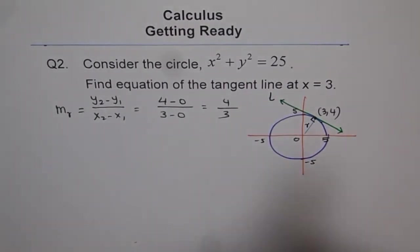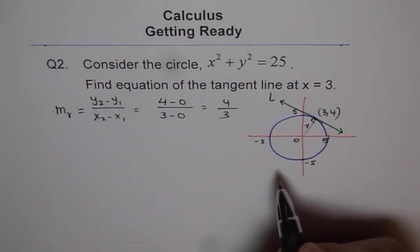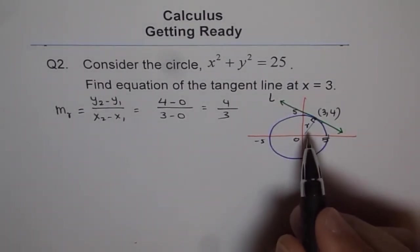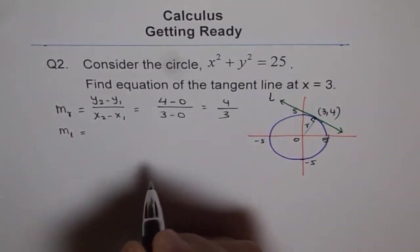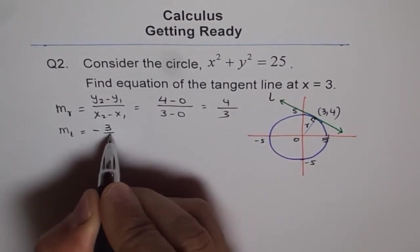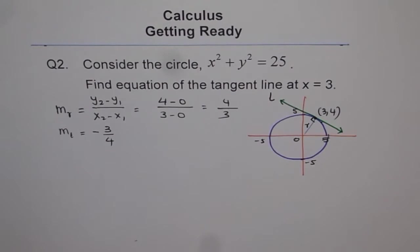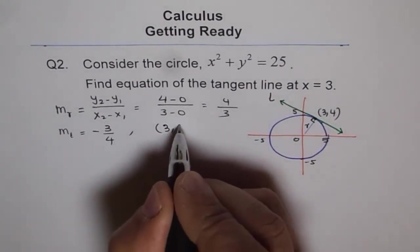Now what is the slope of our line, the tangent line? It is perpendicular to this radius. Therefore slope should be negative reciprocal. So we say slope of our line L is negative of reciprocal, that means 3/4. So that is the slope of our line. And this line is passing through a point which is 3, 4.